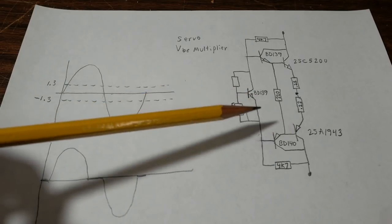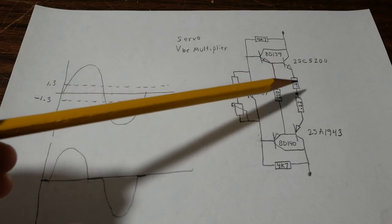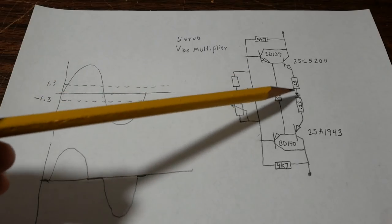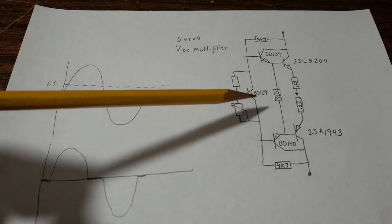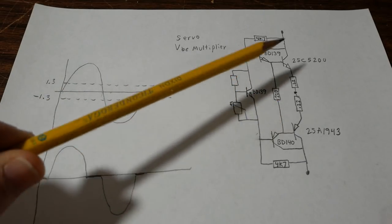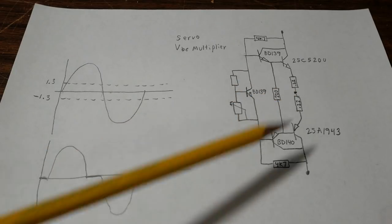If it falls out of a certain range you know if the current gets too low then you can start seeing crossover distortion issues and if it gets too high the amplifier could get warmer and potentially run into a thermal runaway even with this circuit installed. So that's the idea of the circuit tracking the thermals of the output transistors to keep that bias in check.